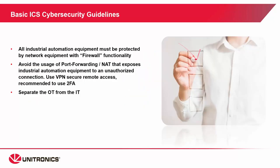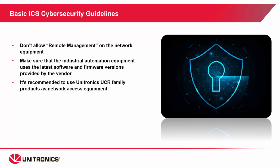Here are some general ICS cybersecurity guidelines. All industrial equipment should be protected by network equipment with firewall functionality. Avoid port forwarding or network address translation. Instead, use VPN, ideally with two-factor authentication. When possible, separate OT — operational technology — from IT, information technology. Don't allow remote management of any network equipment, like routers.